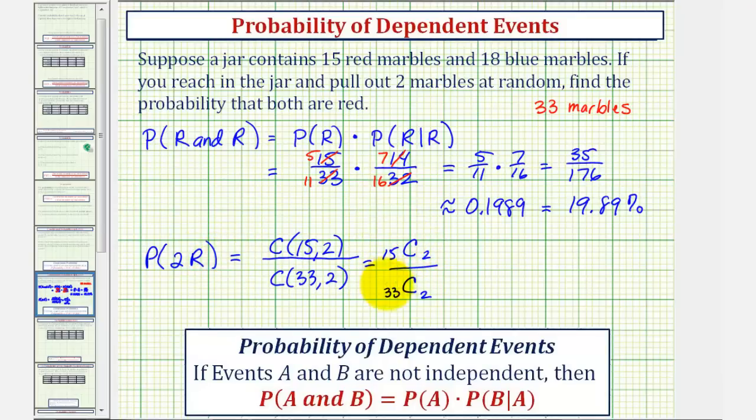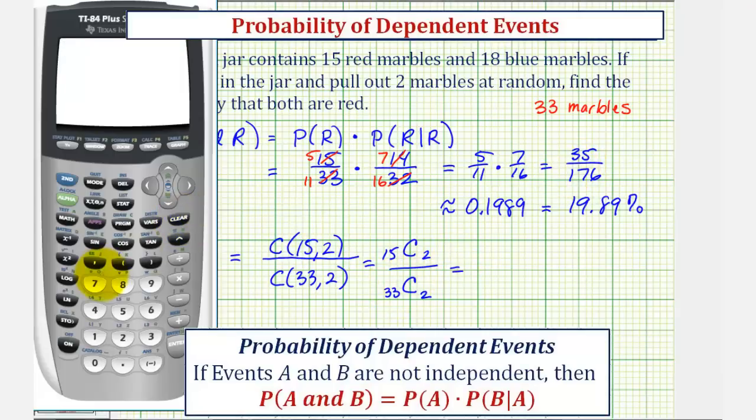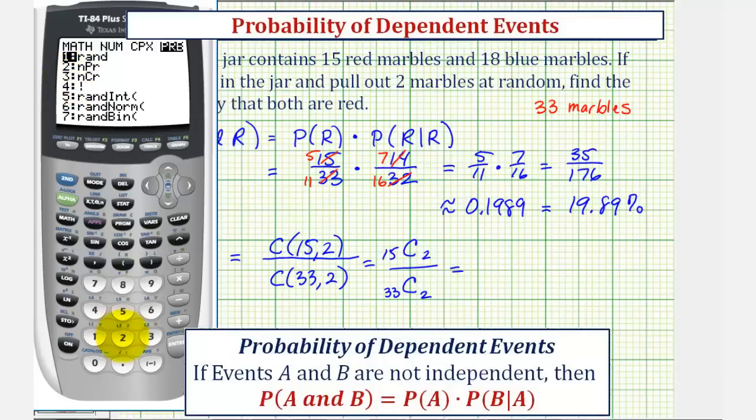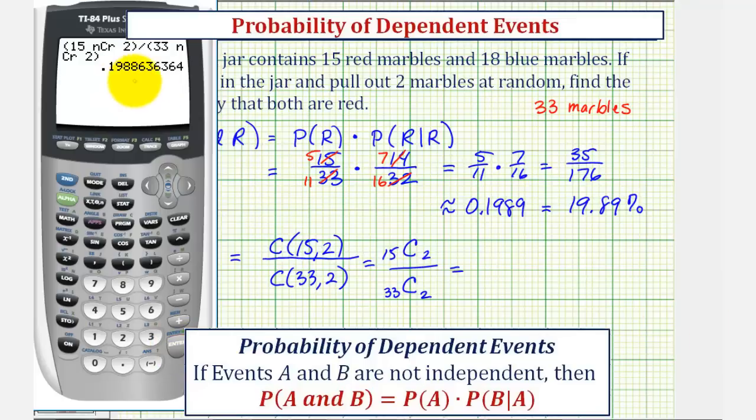And we are going to evaluate this using the calculator and make sure we do get the same result. So our numerator in parentheses will be 15 choose two. So we enter 15, math, arrow over to probability, and select option three for combination, and then we enter two. So there's our numerator of 15 choose two divided by our denominator of 33 choose two. So in parentheses we'll have 33, math, probability, option three, and then two, close parenthesis and enter. And notice how this does give us the same probability as we have here. If we press math, enter, enter, it will convert to a fraction, 35 over 176.